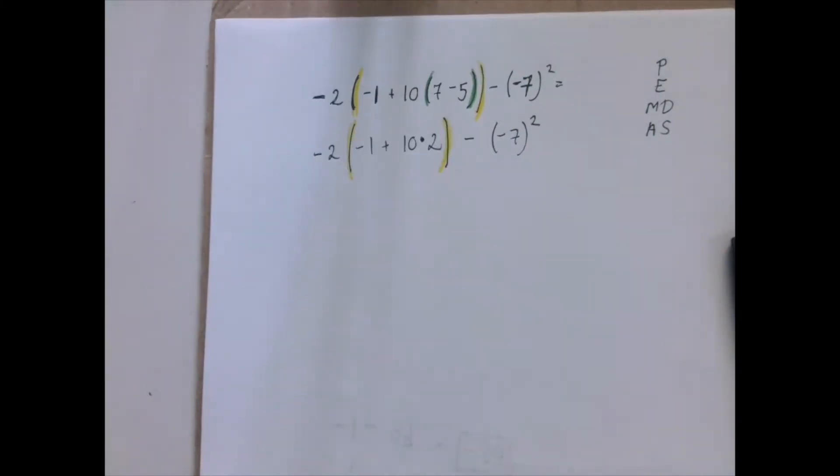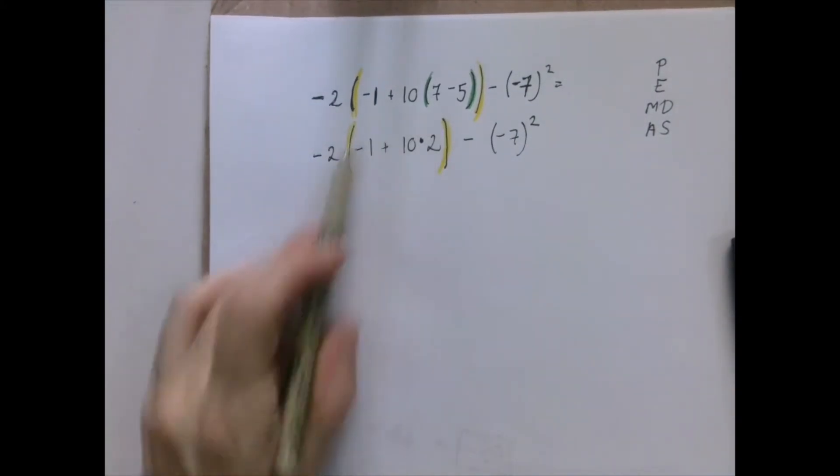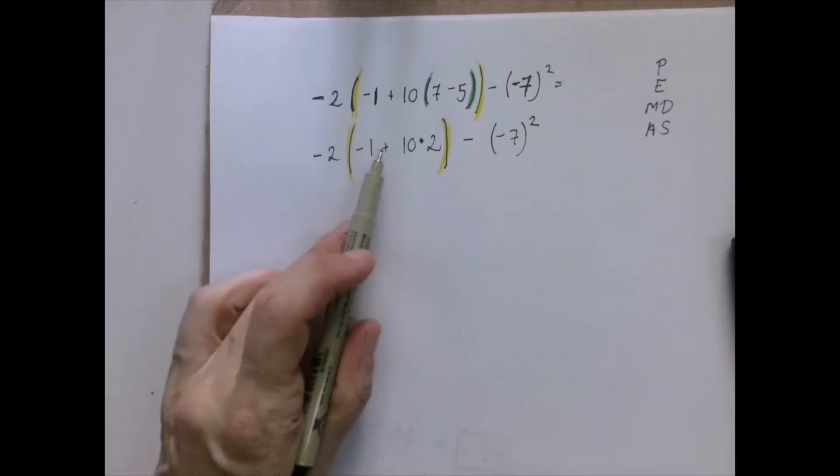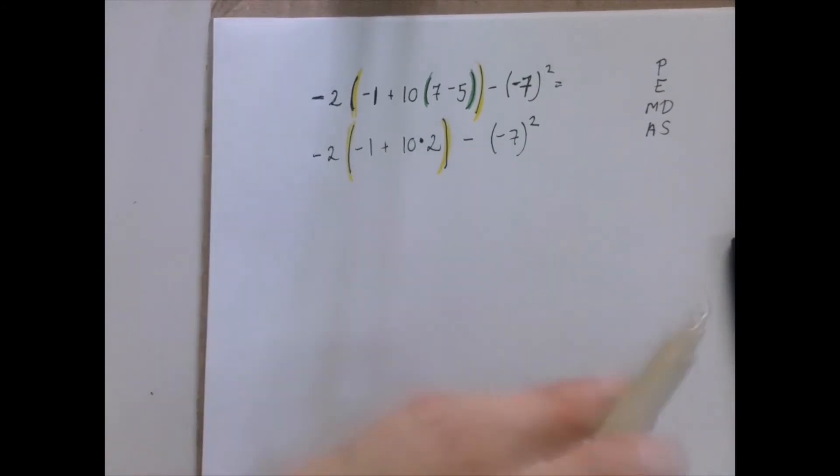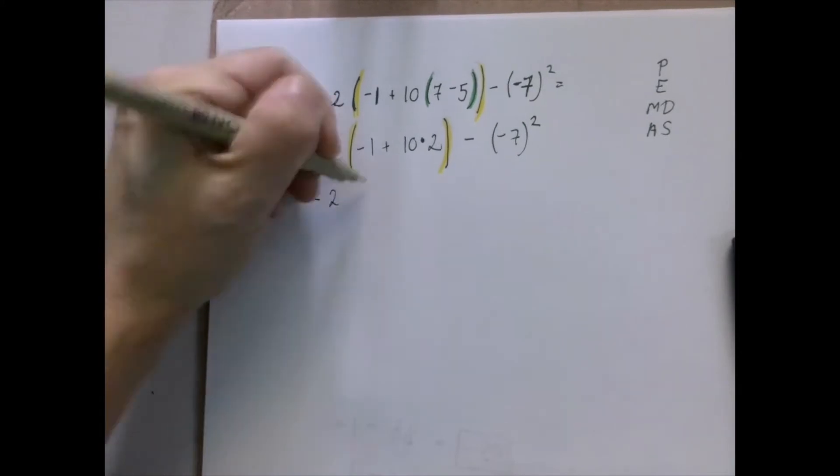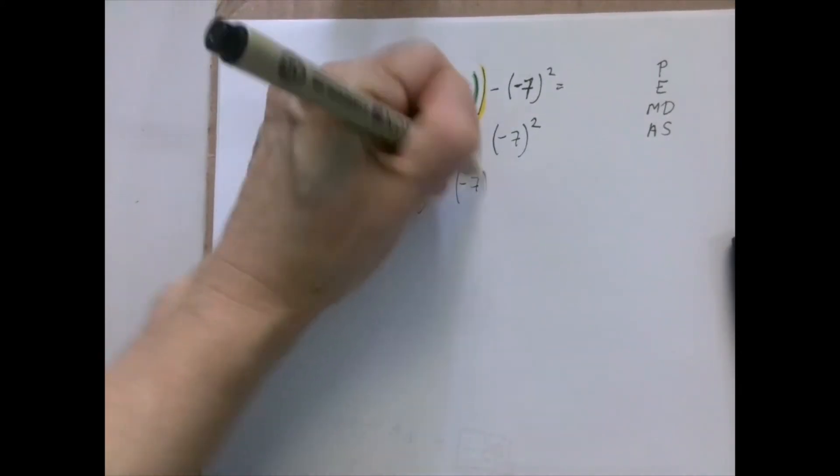We still have a grouping symbol, so we're going to have to work here until this becomes a number. Inside the parentheses there is an addition and a multiplication. Multiplication is stronger, so we do that. 10 times 2 is 20. We carry the rest of the problem.